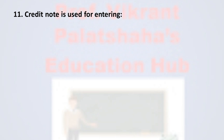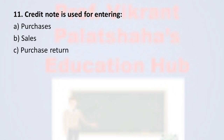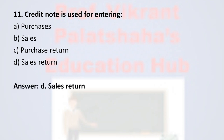Question number eleven: Credit note is used for entering — Option A: Purchases, Option B: Sales, Option C: Purchase Return, Option D: Sales Return. The correct option is Option D, Sales Return. A credit note is prepared for sales return, therefore the correct option is Option D.